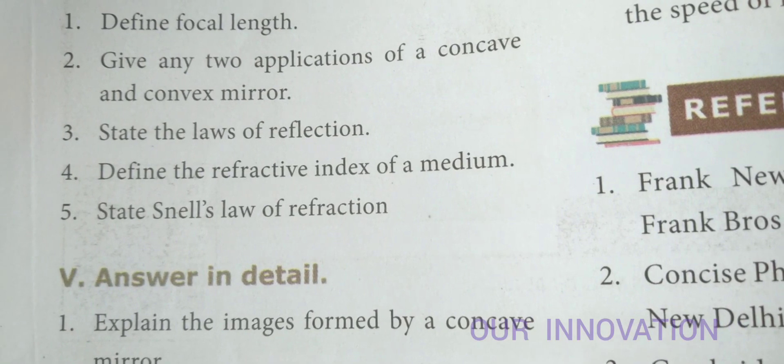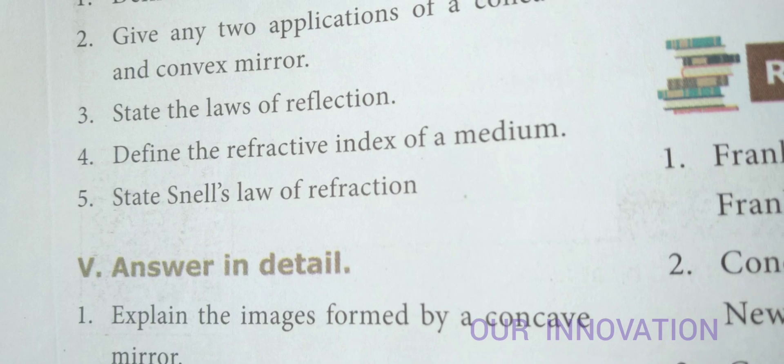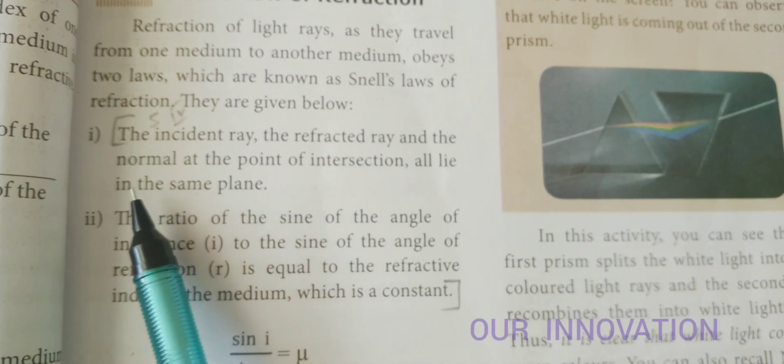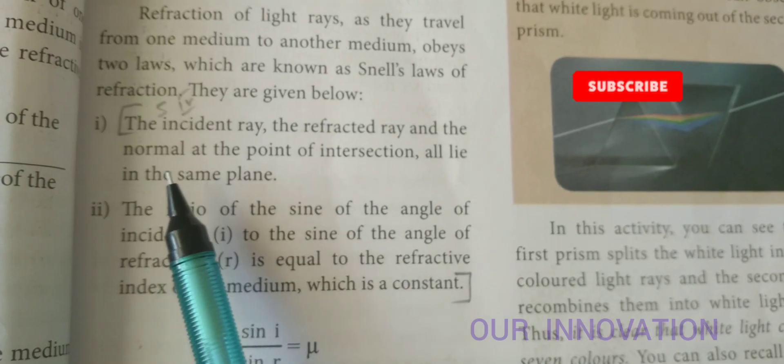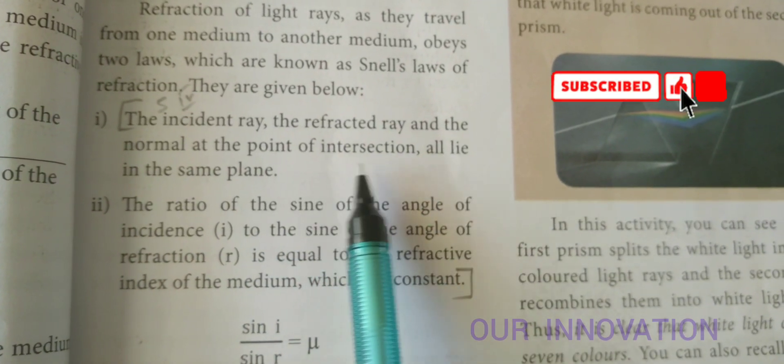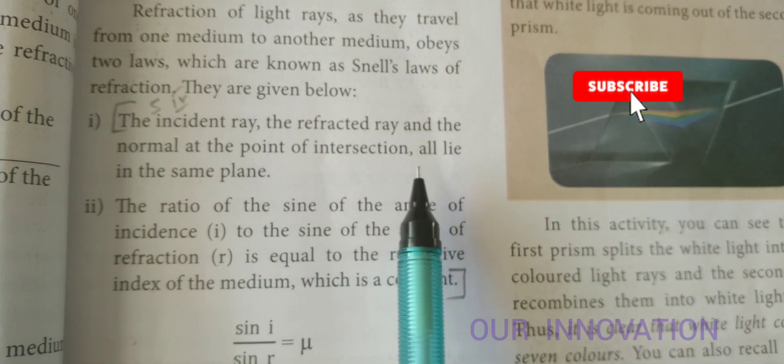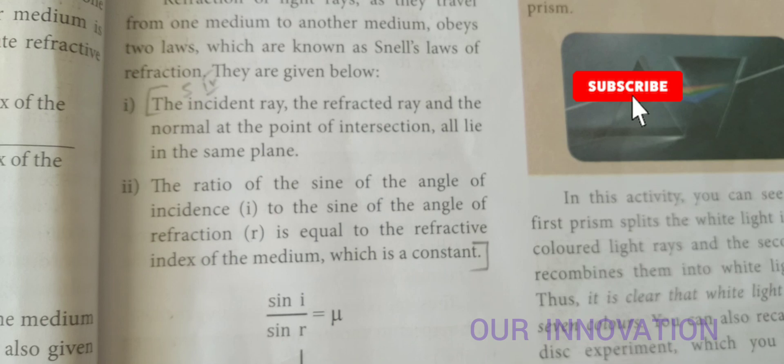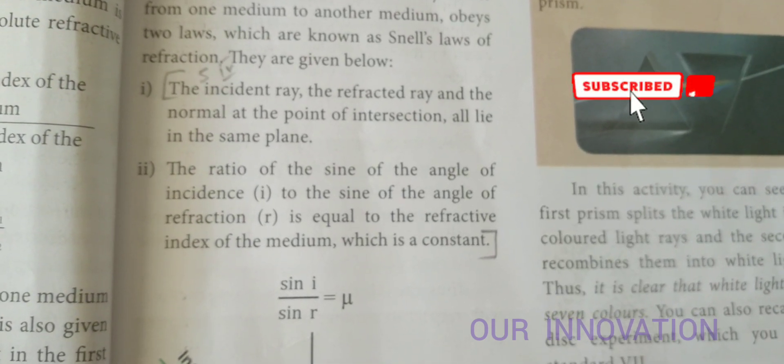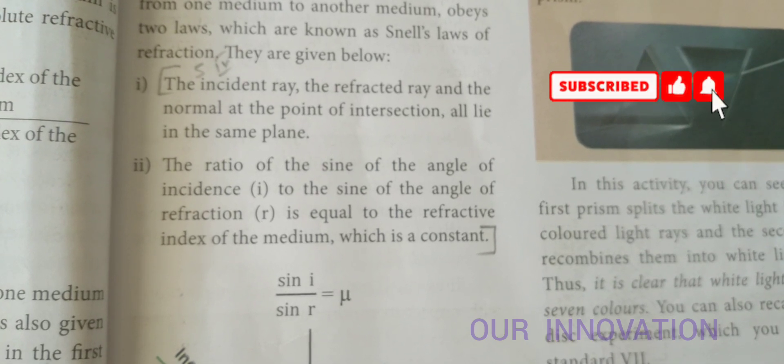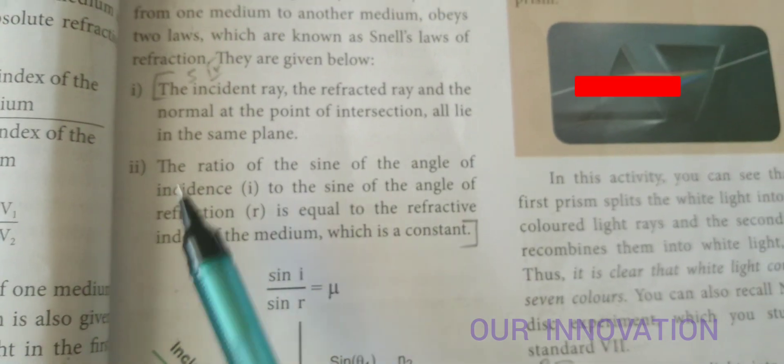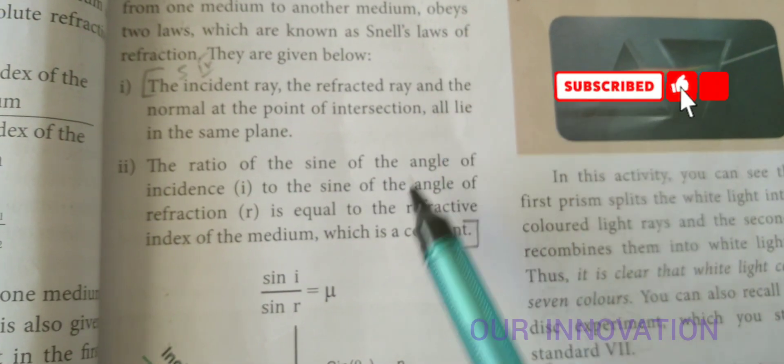Fifth question: State Snell's law of refraction. Page number 31. Snell's law, the first law of refraction: the incident ray, the refracted ray, and the normal at the point of intersection all lie in the same plane. The ratio of the sine of the angle of incidence to the sine of the angle of refraction is equal to the refractive index of the medium, which is constant. You have to write these two laws in two points.